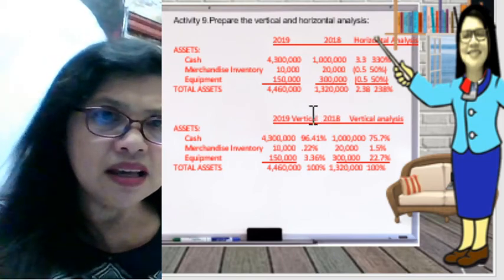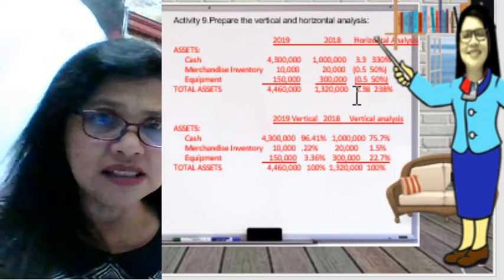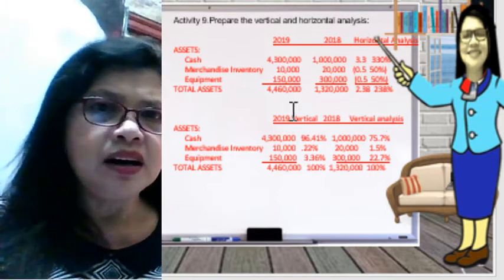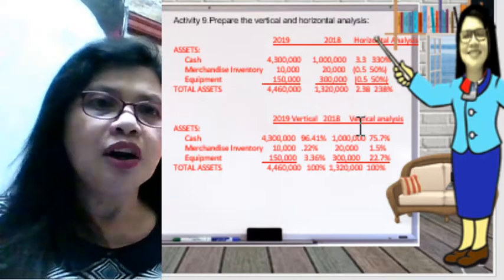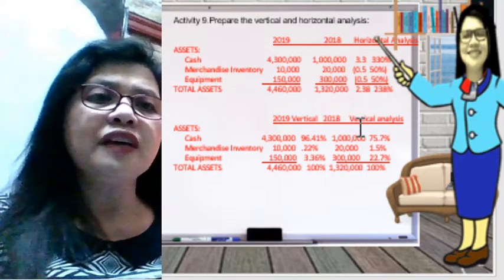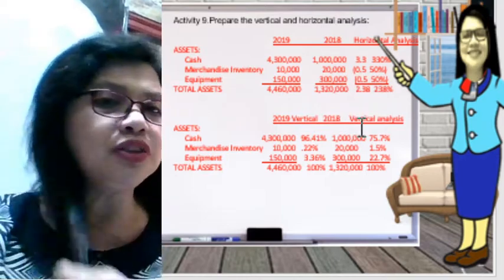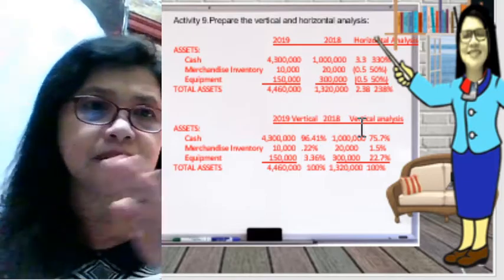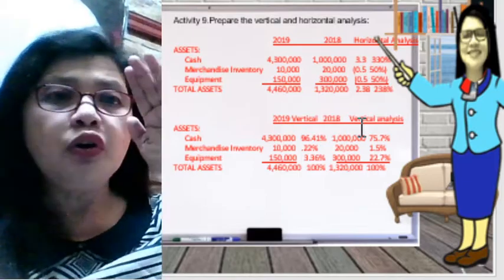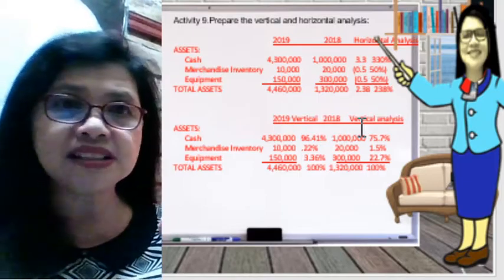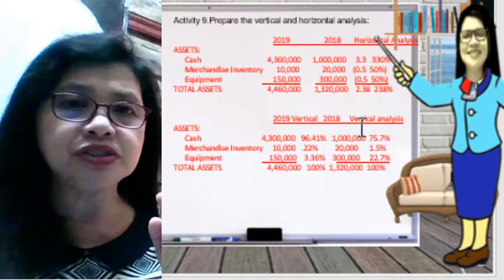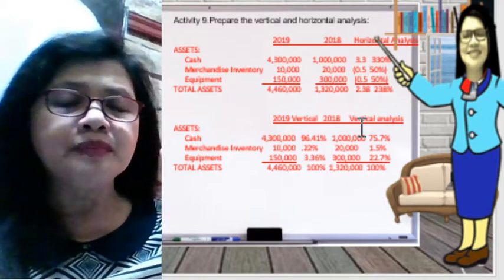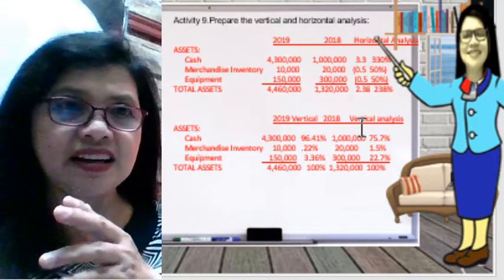The same applies to the total assets. To repeat: horizontal analysis is about trend analysis — we look for the increase, decrease, or no change in accounts comparing the previous year to the current year.